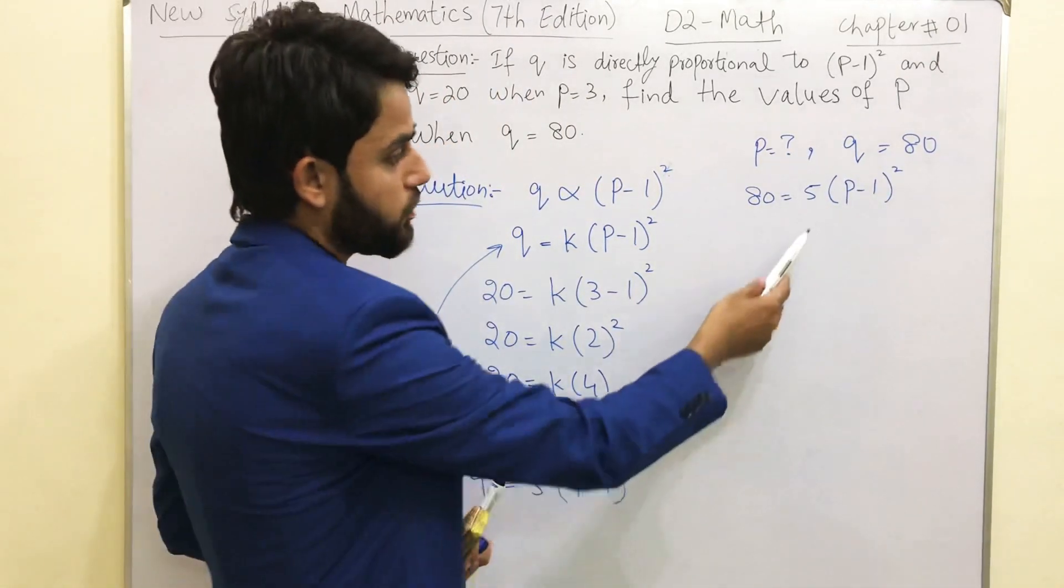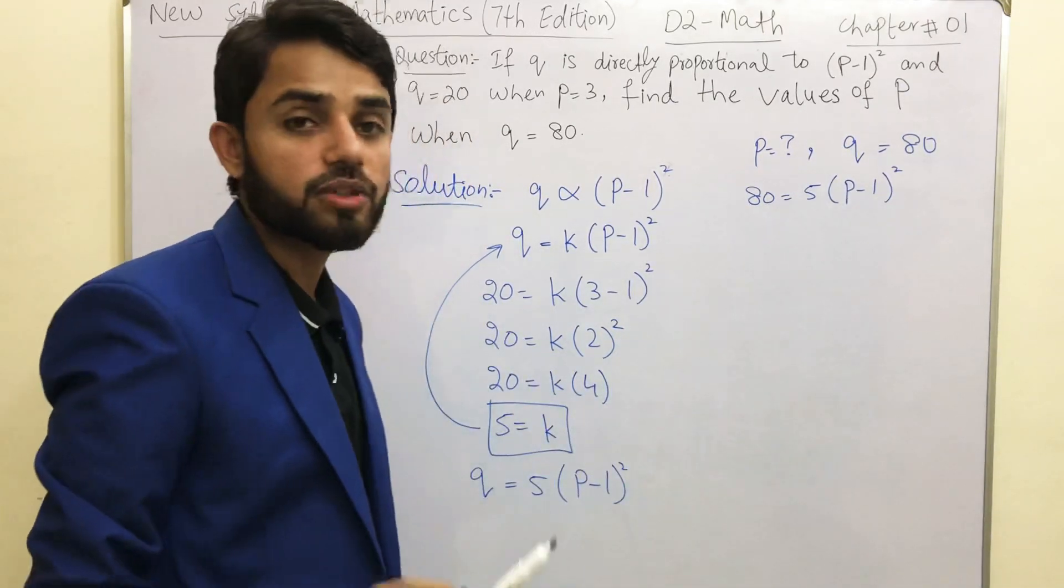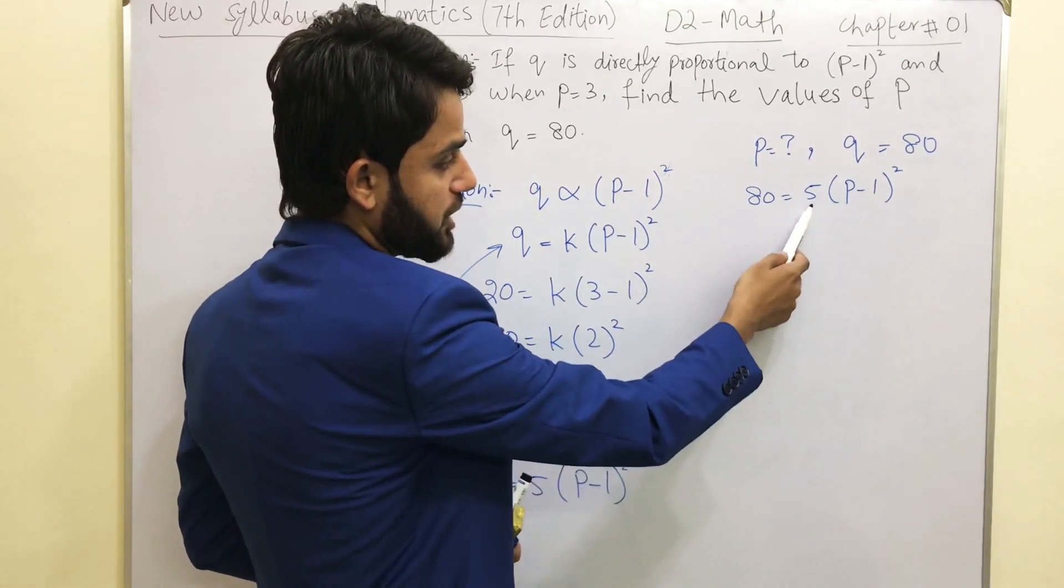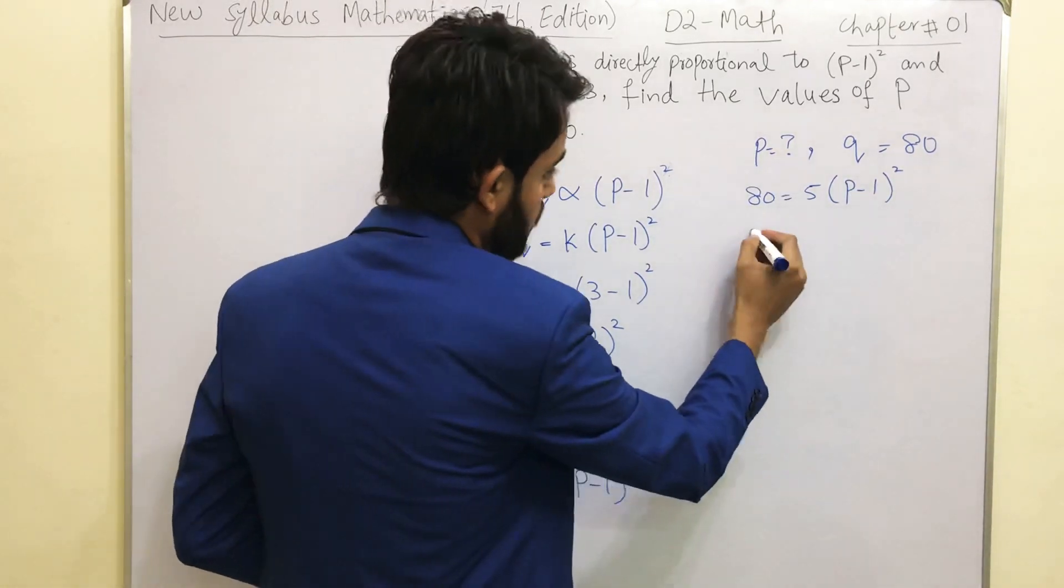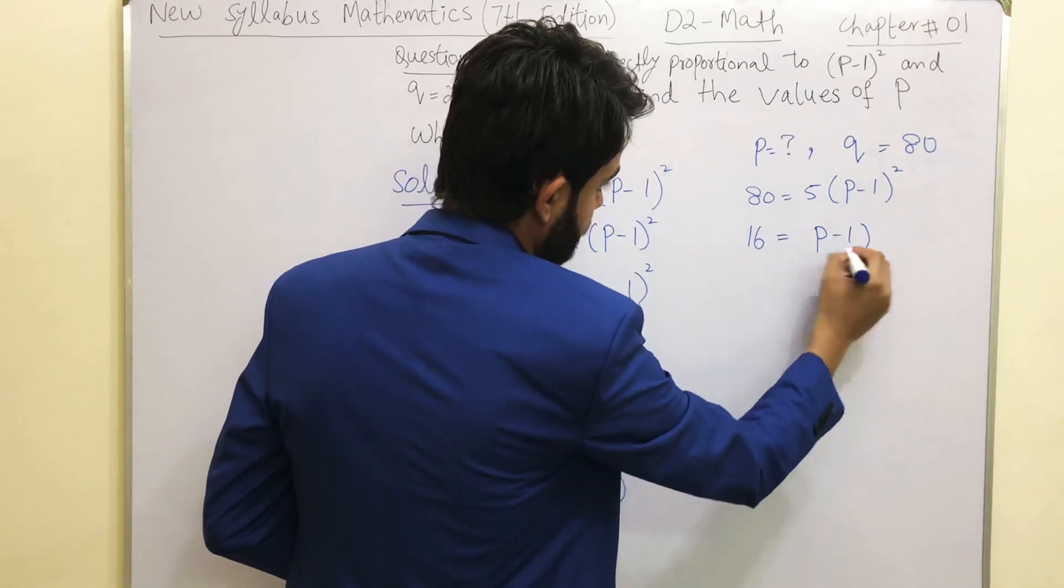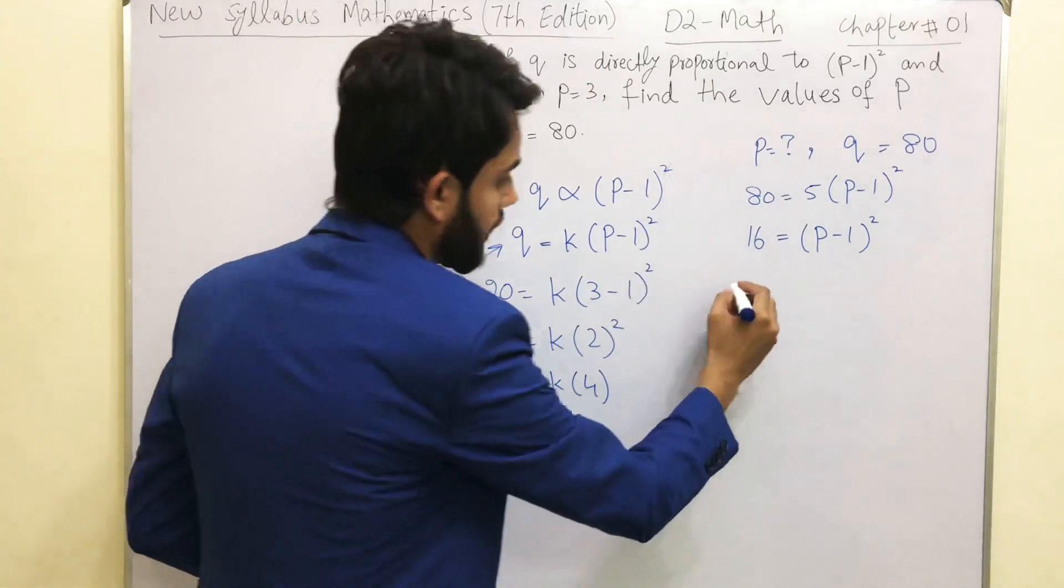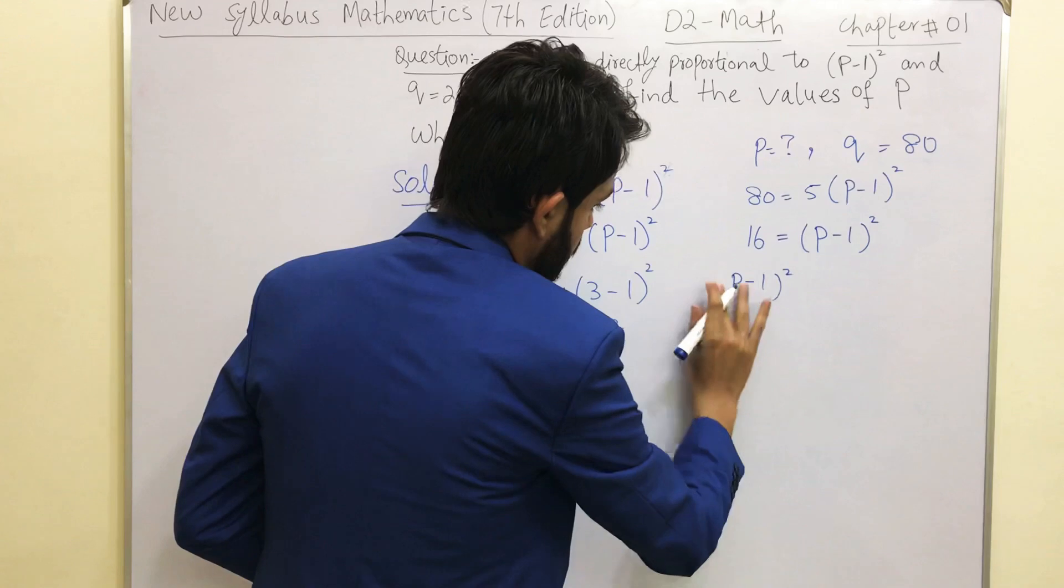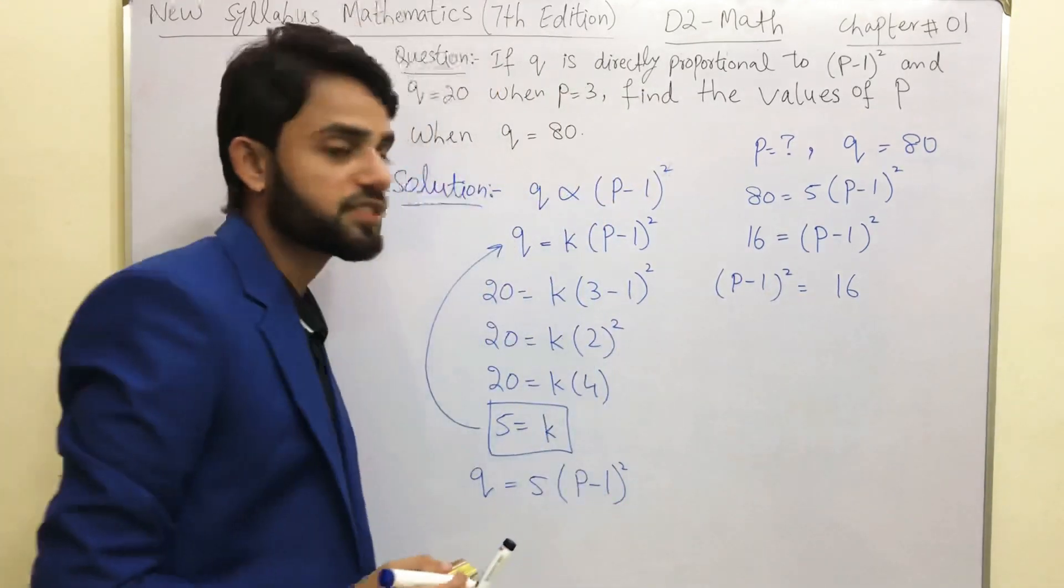From here we know that we need to find out the value of P, and this is the only variable over here, which means that we need to separate this. So we are going to shift this 5 from this side of the equation to the other side: 80 over 5. 80 divided by 5 is going to give you 16. So it would be much better if I write this step like this: (P-1)² = 16.